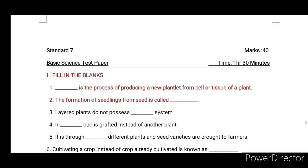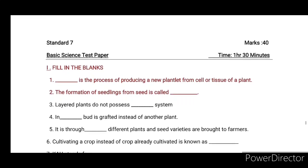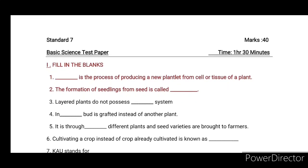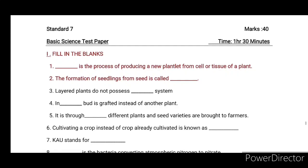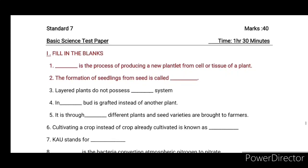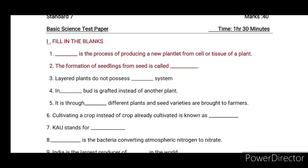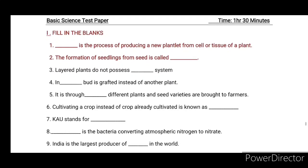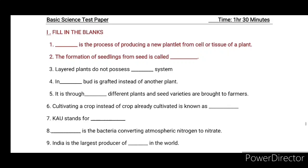Fifth: it is through Dash that different plants and seed varieties are brought to farmers. Sixth: cultivating a crop instead of a crop already cultivated is known as Dash. Seventh: KAU stands for Dash. Eighth: Dash is the bacteria converting atmospheric nitrogen to nitrate. Ninth: India is the largest producer of Dash in the world.